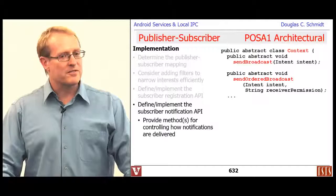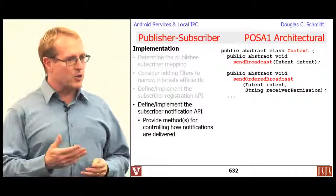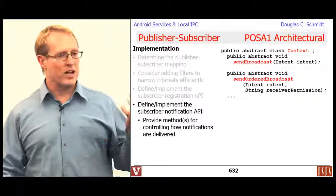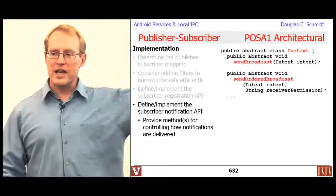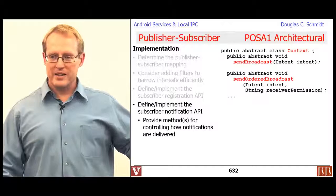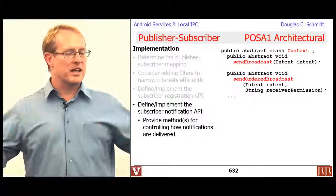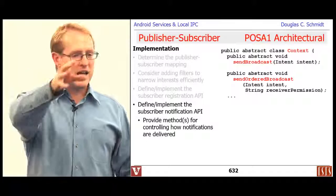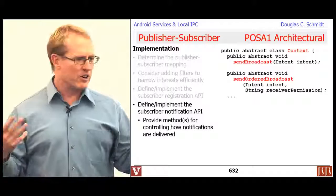You also need a notification API — what the publisher uses to notify subscribers. There are a couple of variants: sendBroadcast sends the intent to all registered broadcast receivers in parallel, and sendOrderedBroadcast serializes the dispatching. There are many variants of sendOrderedBroadcast that do various things. Under the hood in the activity manager service, there's a broadcastIntent method as the entry point, which quickly grabs a lock and calls broadcastIntentLocked — about 350 lines of very complex code.